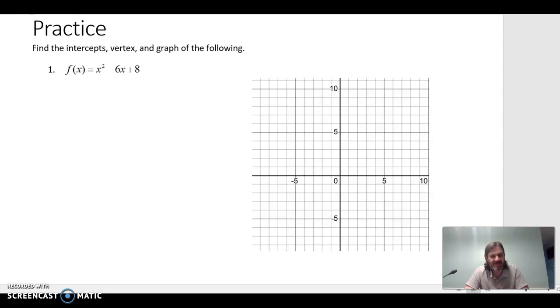The function is f of x equals x squared minus 6x plus 8. So let's find some x intercepts. Remember we find x intercepts always by letting y equals 0.